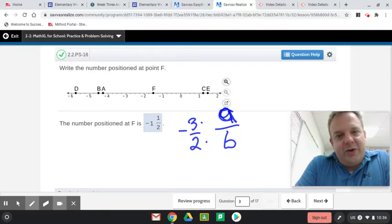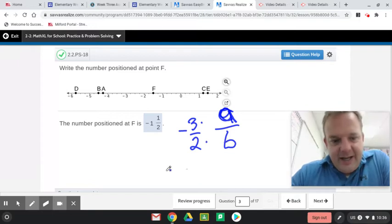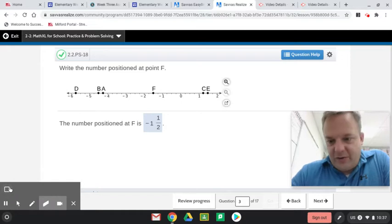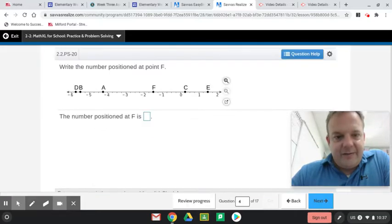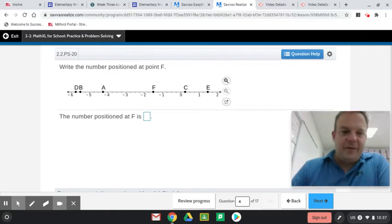So any number that can be put as an improper fraction or proper fraction is a rational number. And the number 2 is a rational number because it can be put in 2 over 1. Just think of it as it can be put in the form of a fraction or a decimal or an improper fraction.